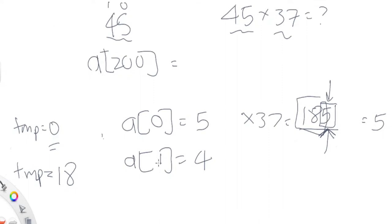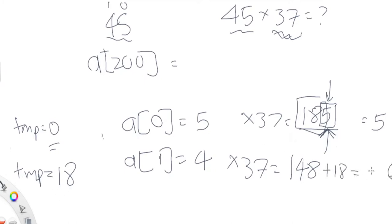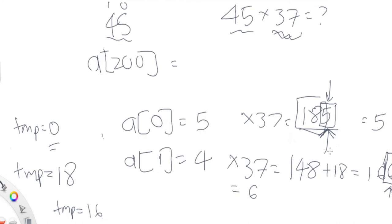The next iteration: index 1 equals 4. We multiply 4 by 37 to get 148, and add it to the carry of 18, giving 166. The ones digit 6 replaces a[1], so now the array has [5, 6]. The carry becomes 166 / 10 = 16. So we now have the digits 5 and 6 stored, with 16 remaining as carry.